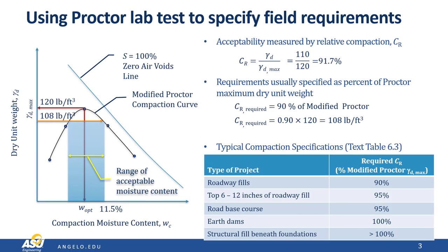This table presents typical compaction requirements for various types of applications. Notice that for applications where low compressibility and high strength are critical, such as below building foundations, we can specify compaction requirements in excess of 100% modified Proctor. This means that in the field, the contractor would have to use more compaction energy than is used in the modified Proctor test.